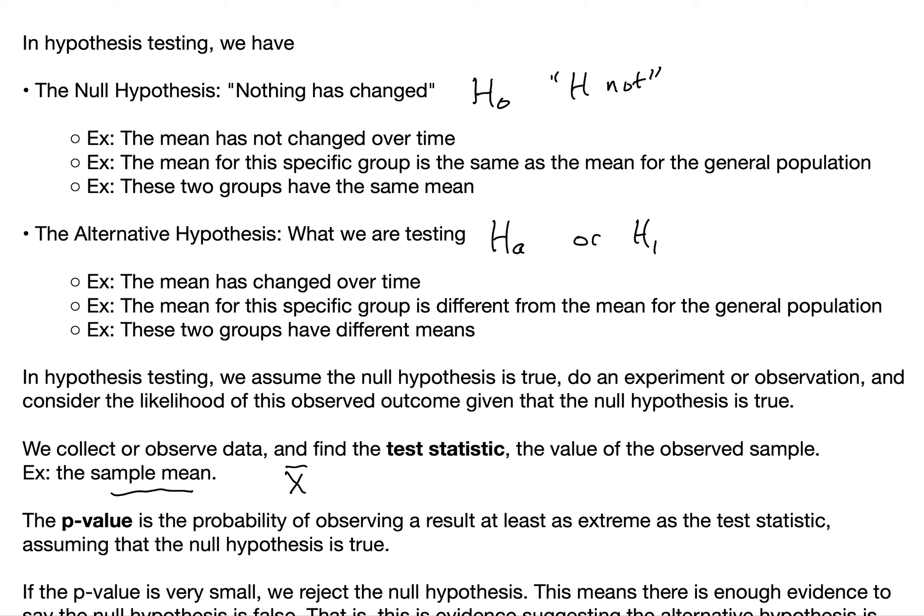The alternative hypothesis is the hypothesis that we're testing, and it's typically denoted either by HA for alternative or H1. Examples of the alternative hypothesis would be: the mean has changed over time, or the mean for a specific group is different from the mean of the general population, or two groups have different means.